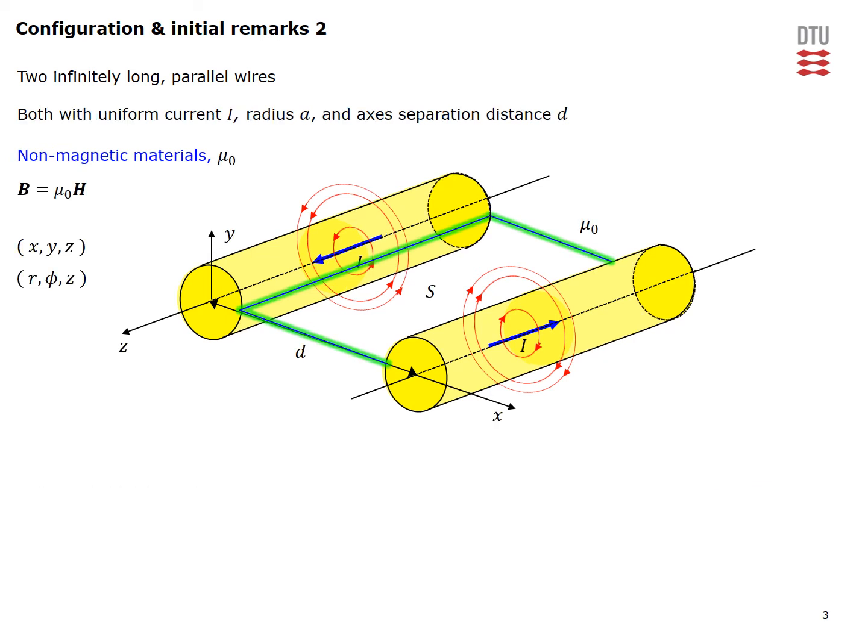Let's try first to determine the total field between the wires. If we only consider wire 1, this is essentially a volume current density configuration that we considered in video problem 13.